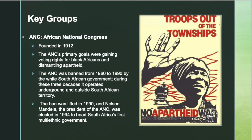Key groups. The ANC, African National Congress, was founded in 1912. The ANC's primary goals were gaining voting rights for black Africans and dismantling apartheid. The ANC was banned from 1960 to 1990 by the white South African government. During those three decades, it operated underground and outside South African territory. The ban was lifted in 1990, and Nelson Mandela, the president of the ANC, was elected in 1994 to head South Africa's first multi-ethnic government.